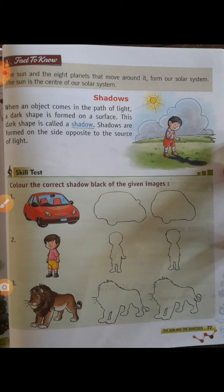Now follow: The Sun and the 8 planets which move around it form our solar system. What is our solar system? The Sun and the planets together make our solar system.